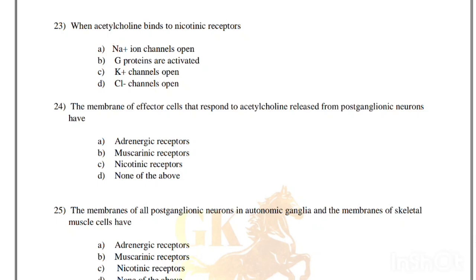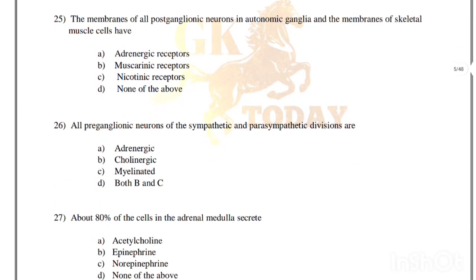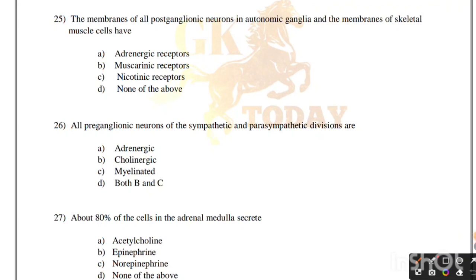The membranes of all postganglionic neurons in the autonomic ganglia and the membranes of skeletal muscle cells have: adrenergic receptors, muscarinic receptors, nicotinic receptors, or none of the above. Correct answer is option C, nicotinic receptors.